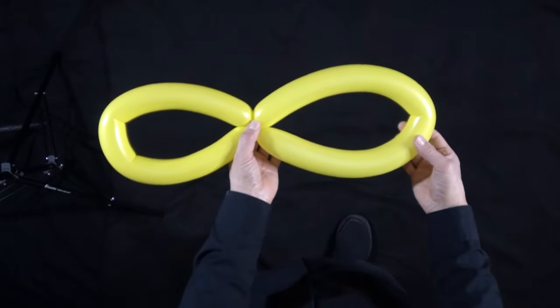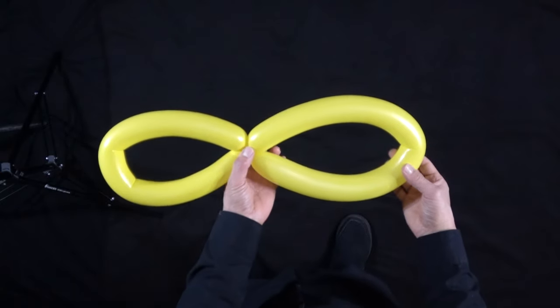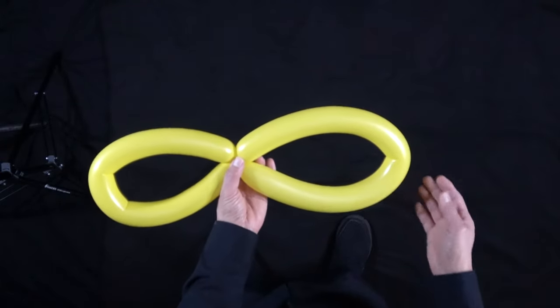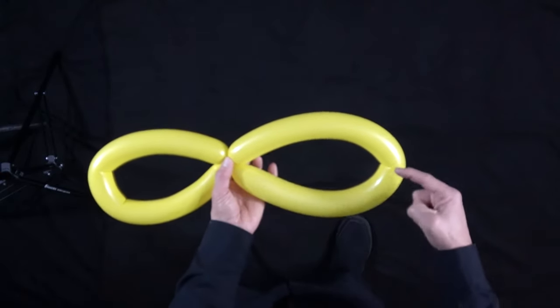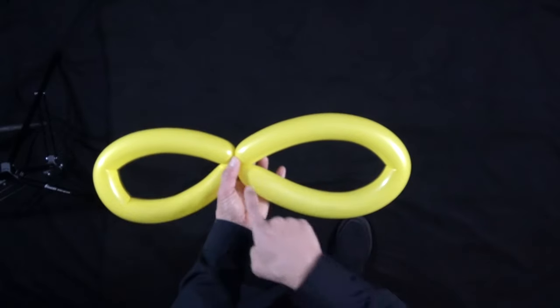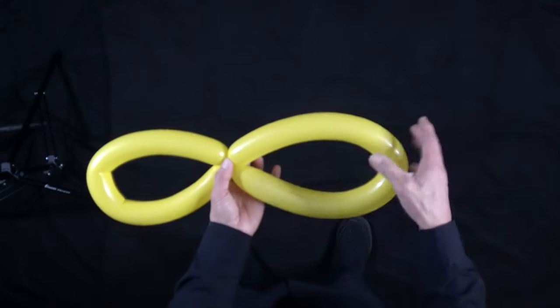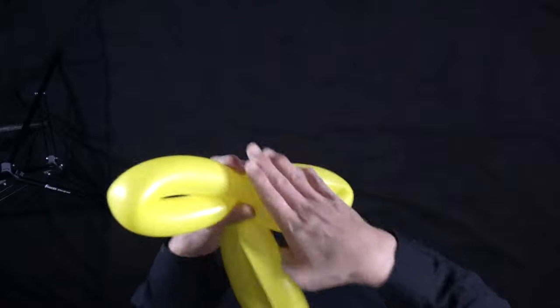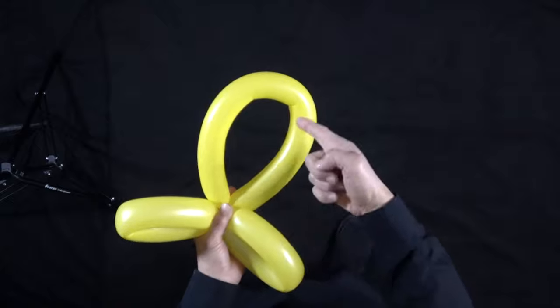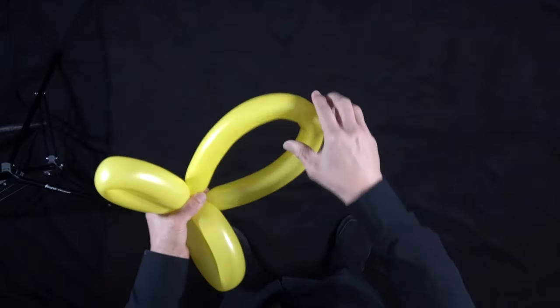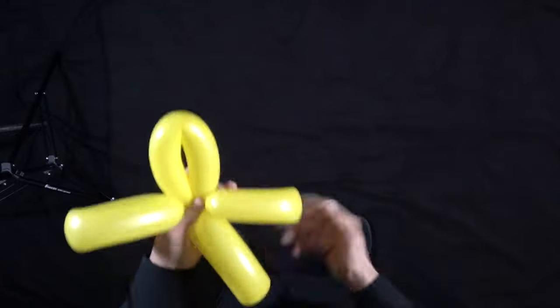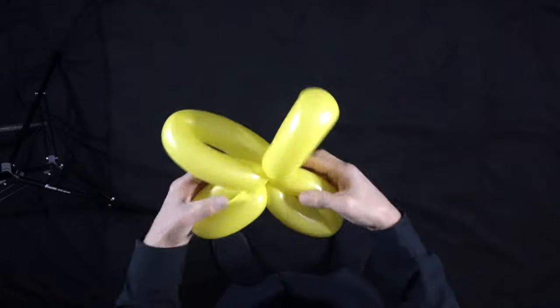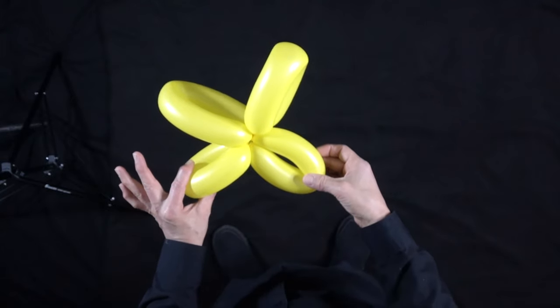You'll have a lopsided bow tie, which is exactly what you want. Now we're going to use the midpoint, so we're going to take this midpoint here and twist it into here. Do the same with the other side midpoint. See the butterfly forming now. Make some adjustments.